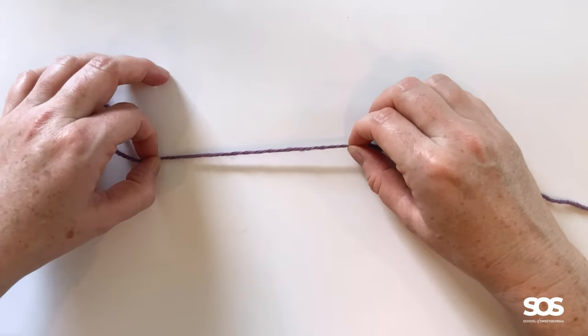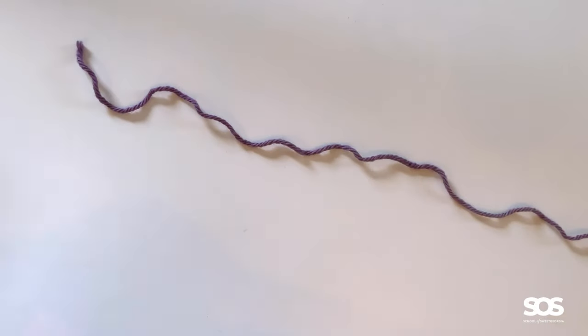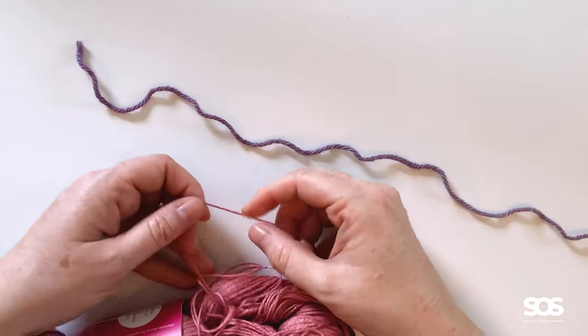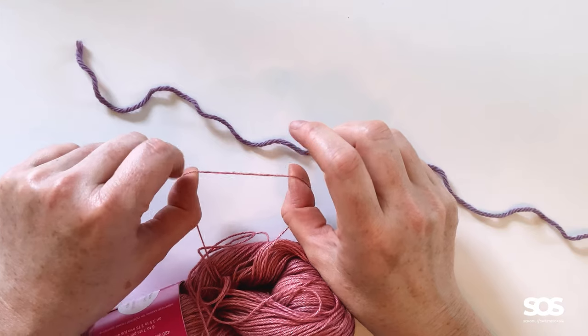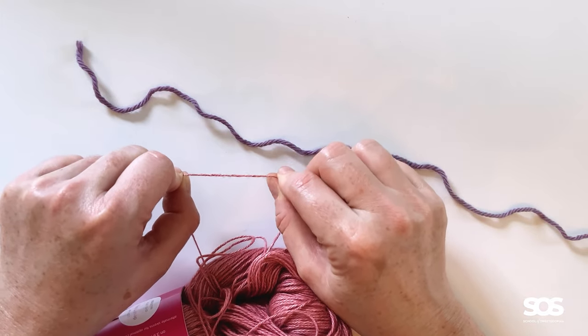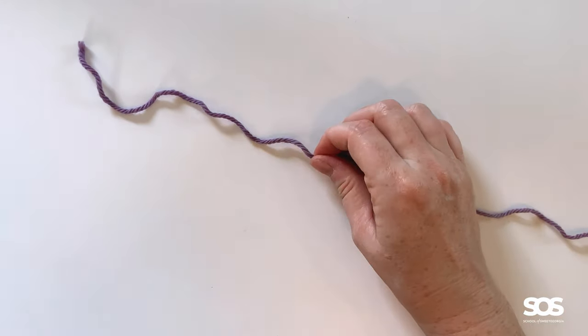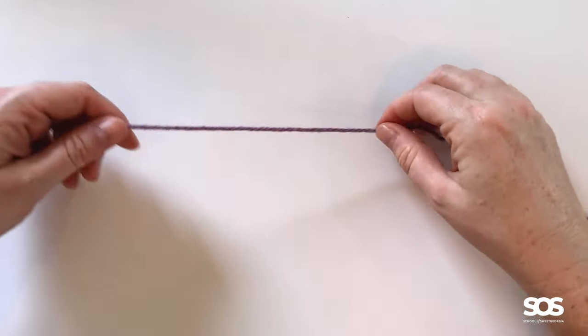This is different than something that includes linen or cotton, which I have an example of here, which is not elastic. If I give that a tug, it's very firm. It's not going anywhere. It's a strong yarn, it's a fantastic yarn, but it's not super ideal for the very first time knitter.